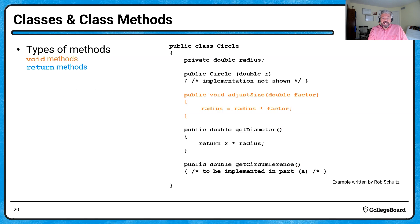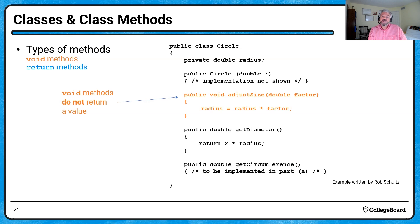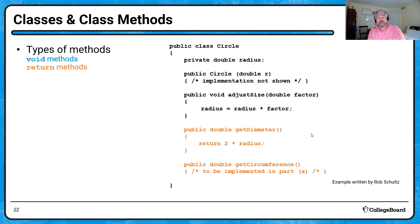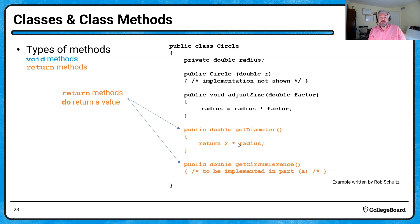A void method does not return a value. Anytime I use void as a return type, I'm basically giving it an instruction — telling my circle object to adjust its size by whatever factor I've passed in. There's nothing I'm waiting for a response on. Then we have two return methods, meaning they include a return statement because I've identified a specific return type. The getDiameter method simply returns two times radius.